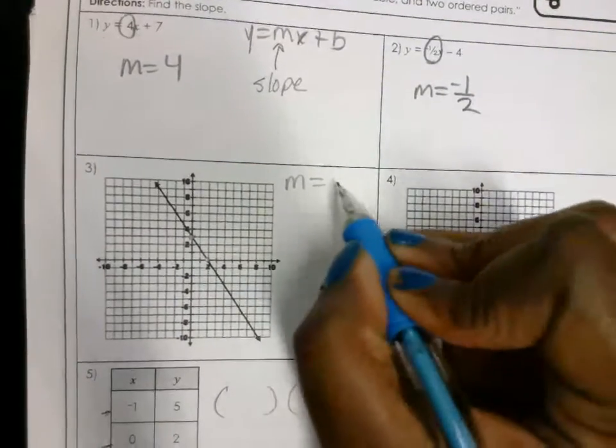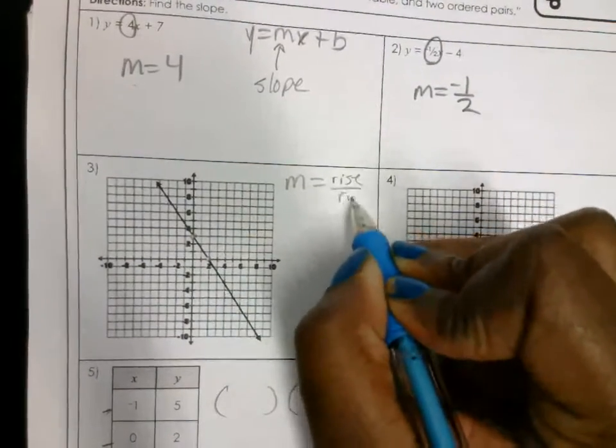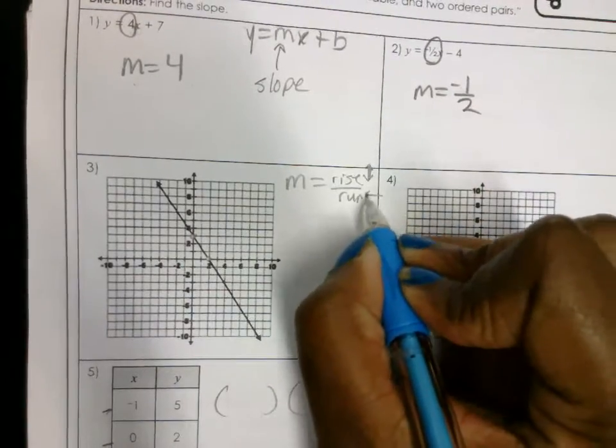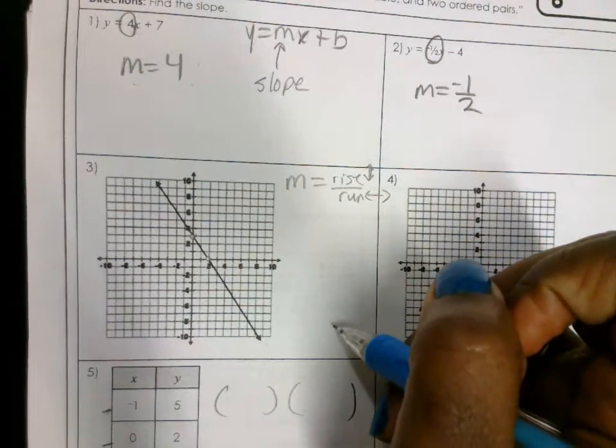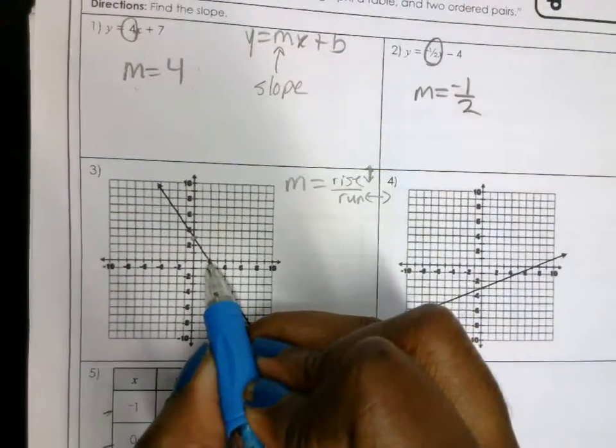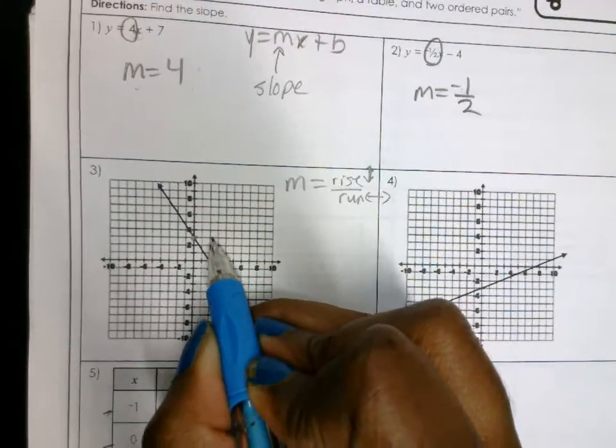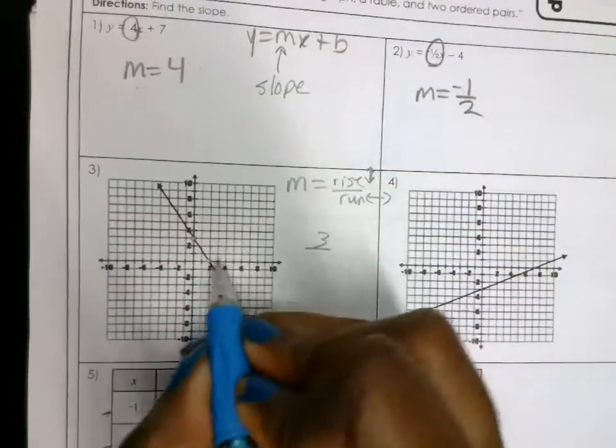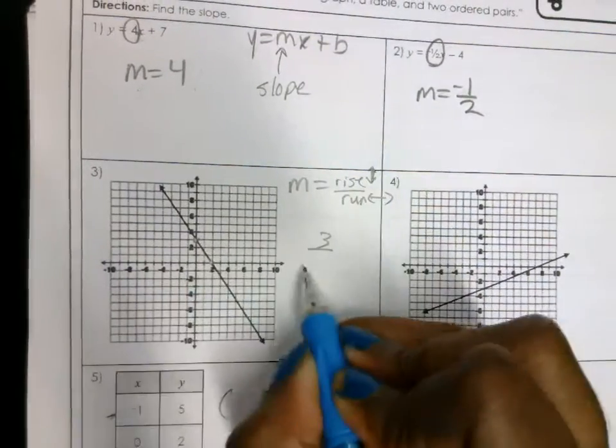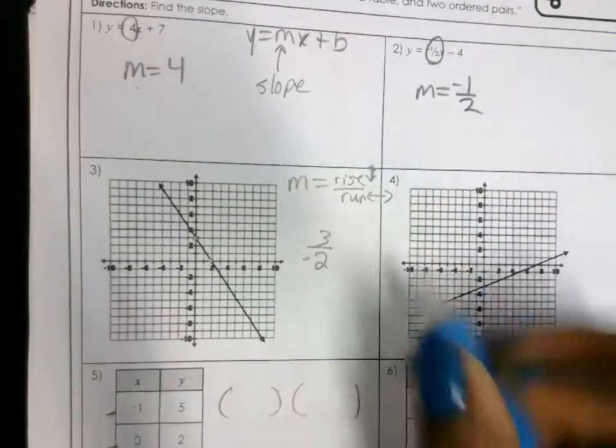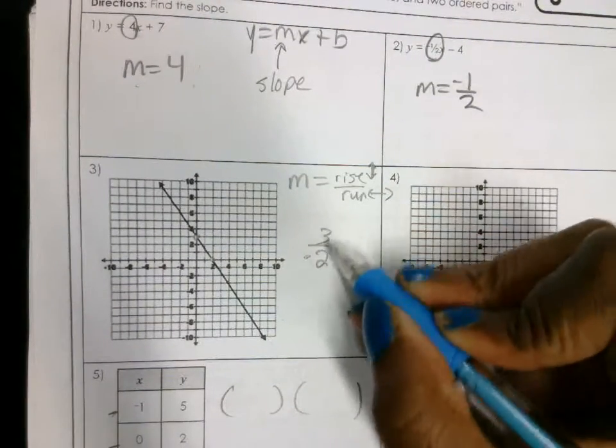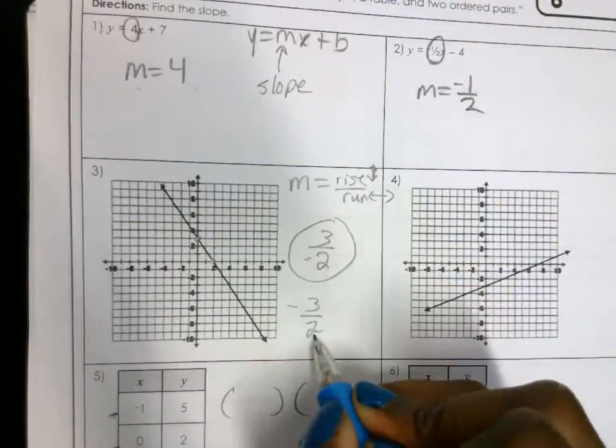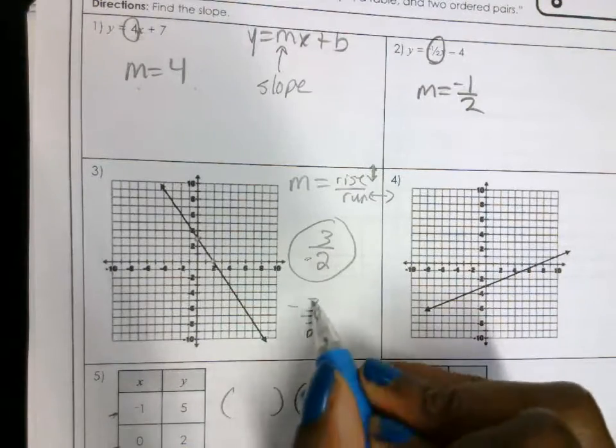So now I'm going to use the formula rise over run. Your rise is how far you go up and down to get to a point. Your run is how far you go from left to right to get to a point, okay? So rise, I go up 1, 2, 3. 3 is my top number, positive 3 because I went up. Run, I go over to the left 2, so my bottom number is negative 2. Make sure that your fraction is reduced, which this is, so my answer is going to be negative 3 over 2.